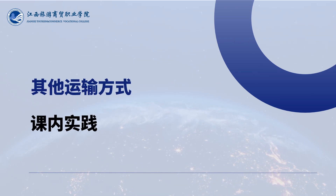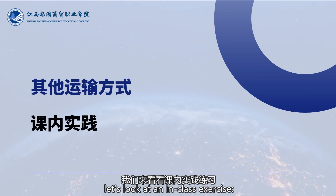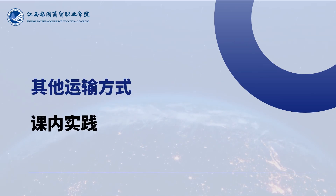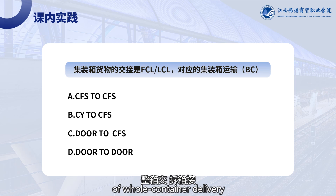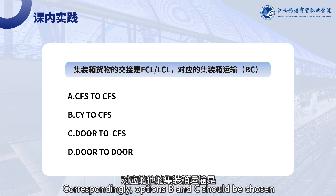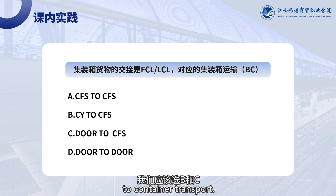After learning the key points, let's look at an in-class exercise. The transfer of containerized cargo involves the process of whole container delivery and container unpacking reception. Correspondingly, options B and C should be chosen for container transport: CY to CFS and door to CFS.